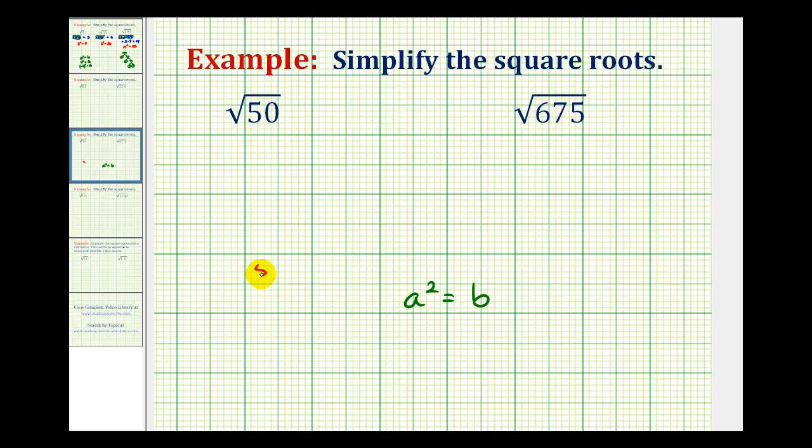So for the prime factorization of 50, we can write 50 as 2 times 25, and 25 is 5 times 5. So the prime factorization of 50 is 2 times 5 times 5.